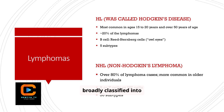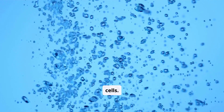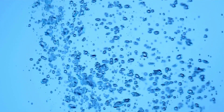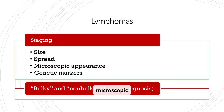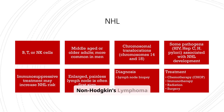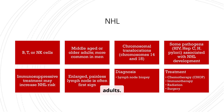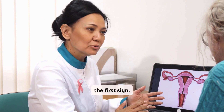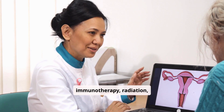Lymphomas are broadly classified into Hodgkin's lymphoma and non-Hodgkin's lymphoma. Hodgkin's lymphoma is more common in young adults and involves B cells with Reed-Sternberg cells. Non-Hodgkin's lymphoma is more common in older individuals and involves B, T, or NK cells. Lymphoma staging considers size, spread, microscopic appearance, and genetic markers, with non-bulky tumors generally having a better outcome. Non-Hodgkin's lymphoma features chromosomal translocations, and an enlarged, painless lymph node is often the first sign. Treatment includes chemotherapy, immunotherapy, radiation, and surgery.